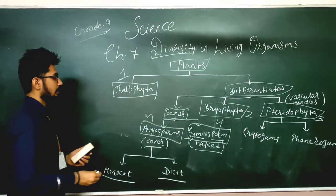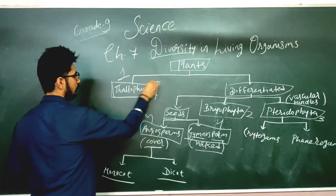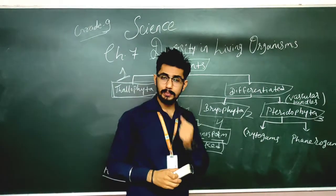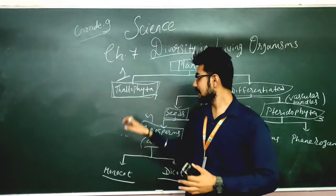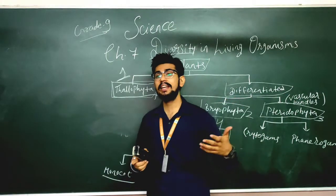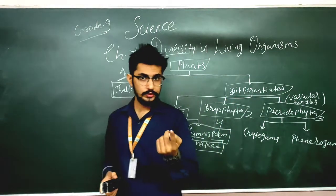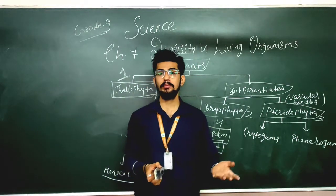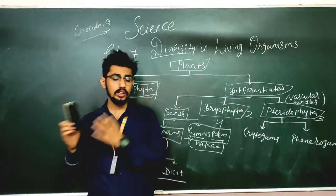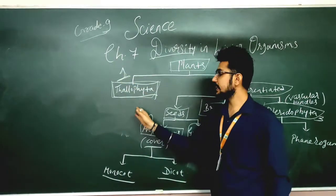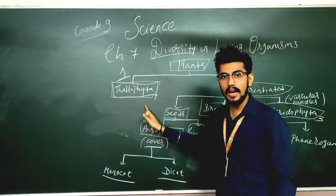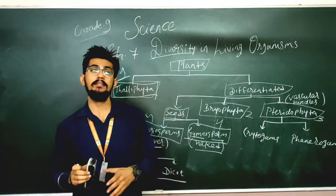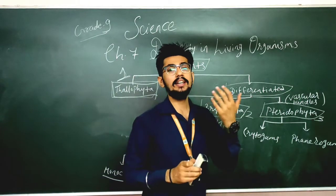The first classification is Thallophyta. Thallophyta is known as the first or most basic plants because they do not have any proper roots, shoots, or flowers, and they also do not have any kind of vascular bundles. Because of all these features, Thallophyta is considered the most basic plant group. They are mostly dominant in aquatic life.